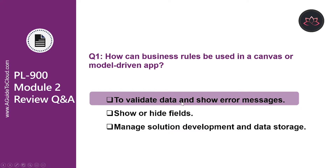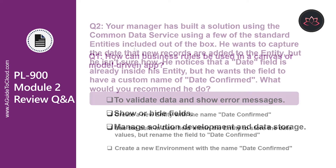Validating data and showing error messages are one of the functionalities available in both Canvas and Model-driven apps via business rules.